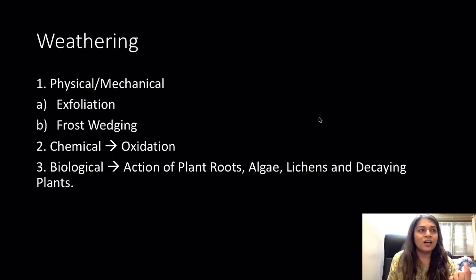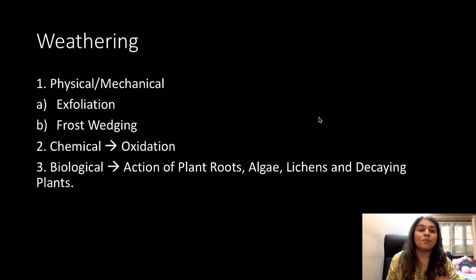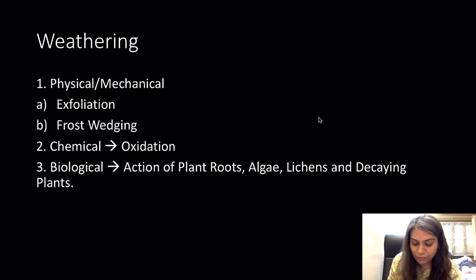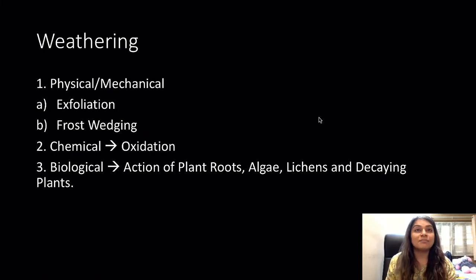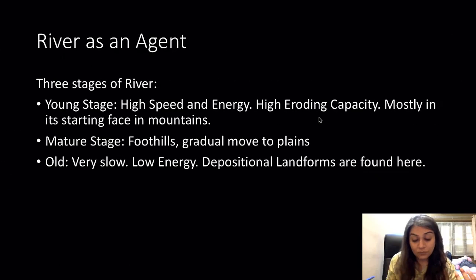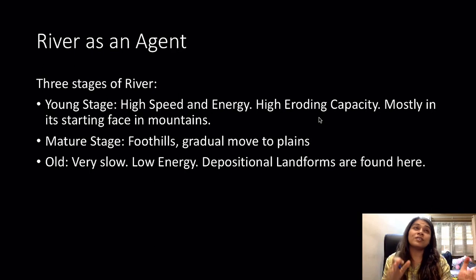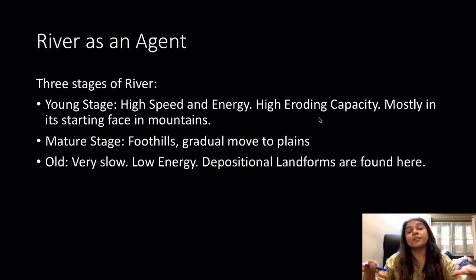Biological weathering happens when lichens, algae, or decaying plants weaken the rock and break it apart. After weathering there is erosion, then transportation, and then deposition — this is the entire denudation process that causes changes in rocks and landforms. We are now going to study landforms caused by different agents of denudation.